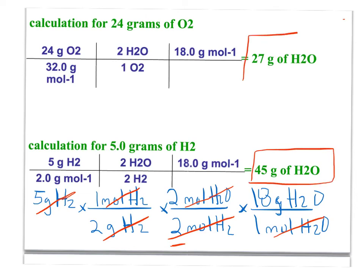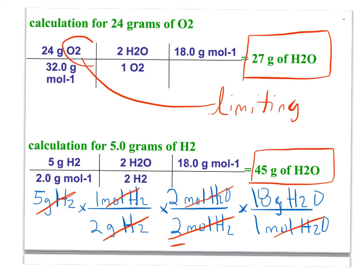We've got 45 and 27. One of these is going to be the amount actually produced — the smallest one is the amount produced, and that's what we call limiting. So the limiting reactant in this situation would be the oxygen, and the 27 grams is what we call the theoretical yield — this is how much we would theoretically produce.